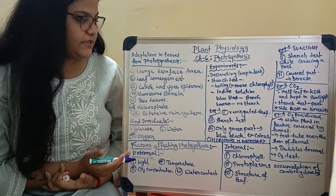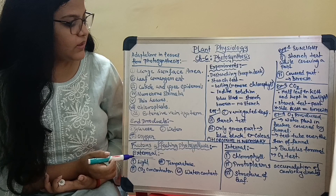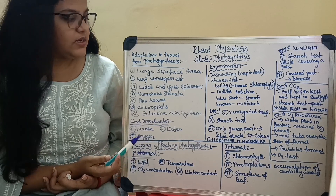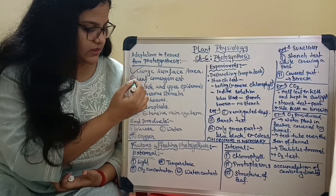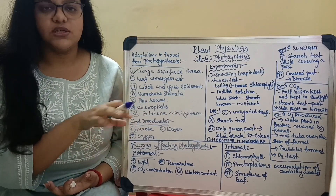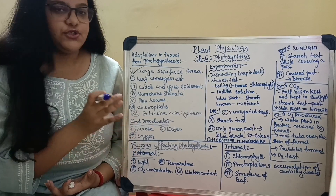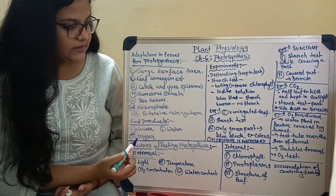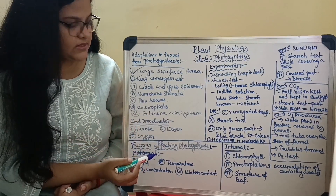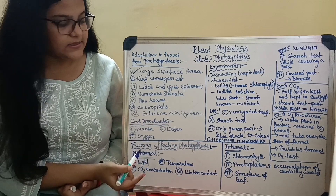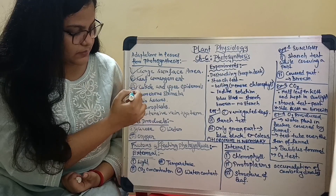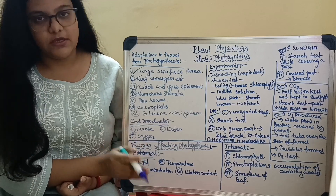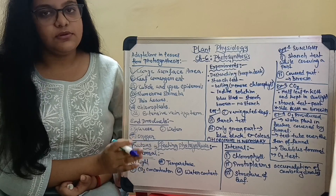Now let us discuss the adaptations of leaves for photosynthesis. First is large surface area: a large surface area means more absorption of sunlight, which equals more photosynthesis. Next comes leaf arrangement: leaves are arranged to absorb maximum sunlight, leading to better photosynthesis. Next is the presence of cuticle on the upper epidermis: the cuticle makes the leaf waterproof and hence suitable for photosynthesis. Next are numerous stomata: a huge number of stomata allows greater CO2 absorption, leading to greater photosynthesis.